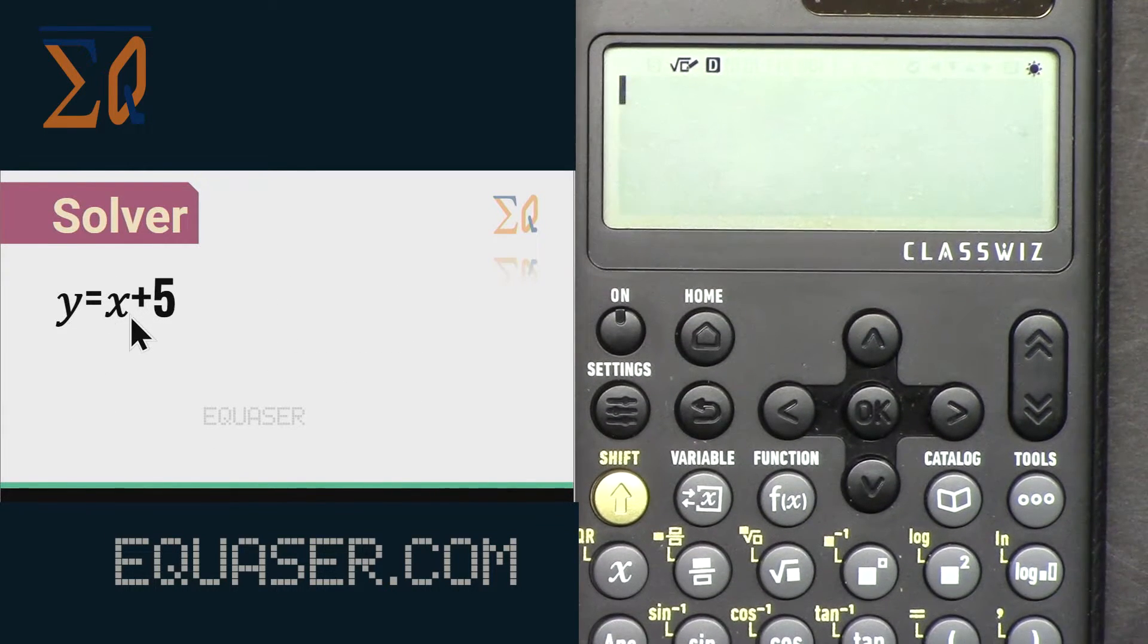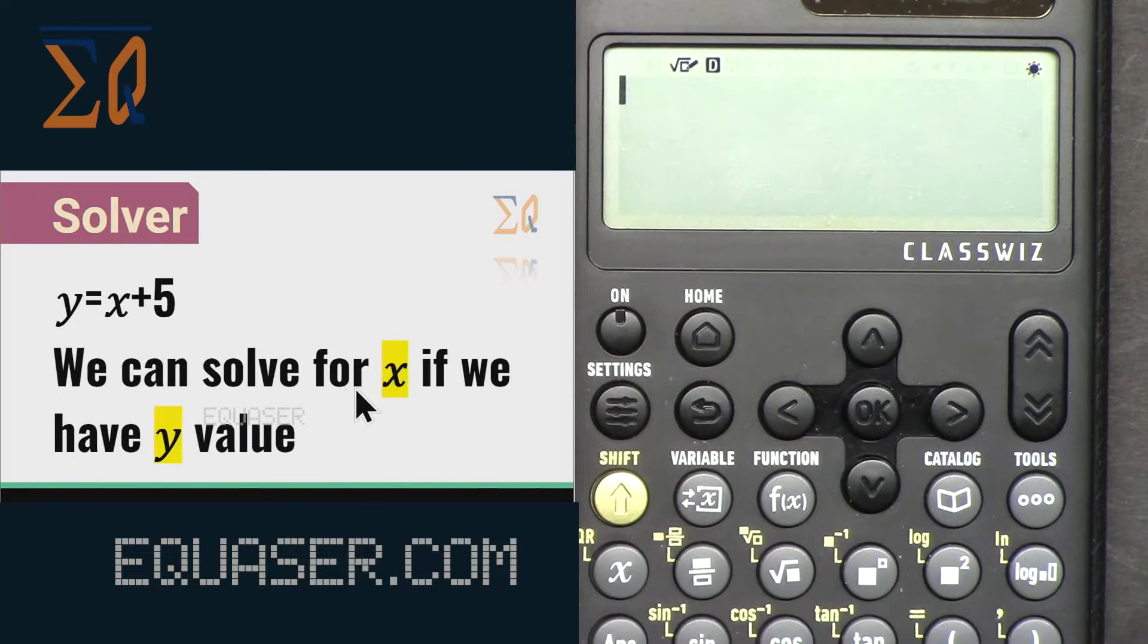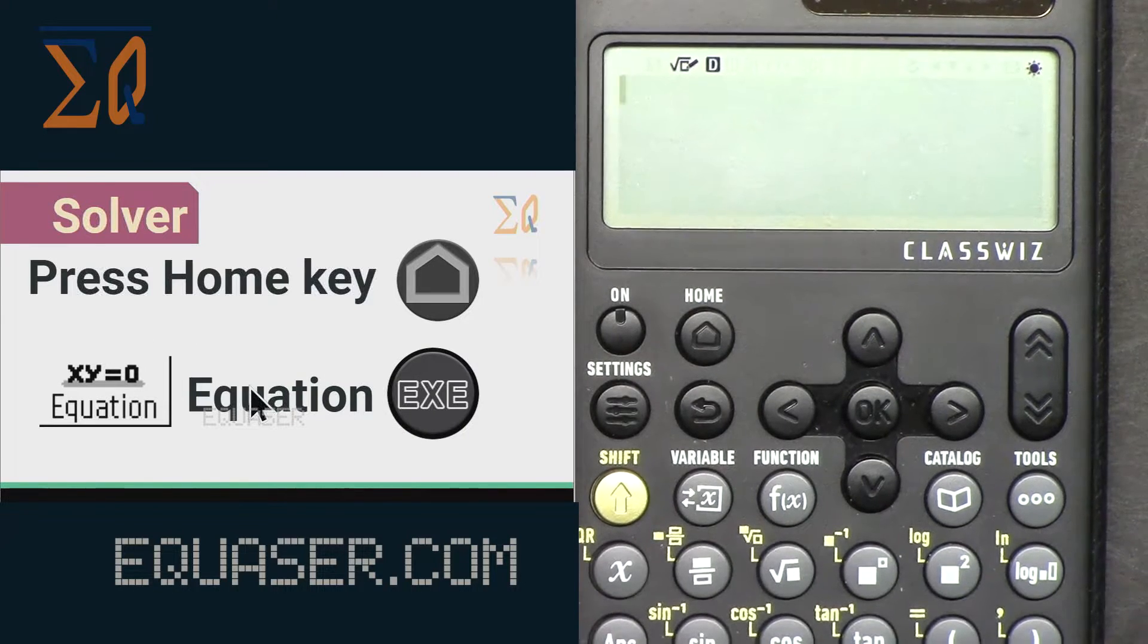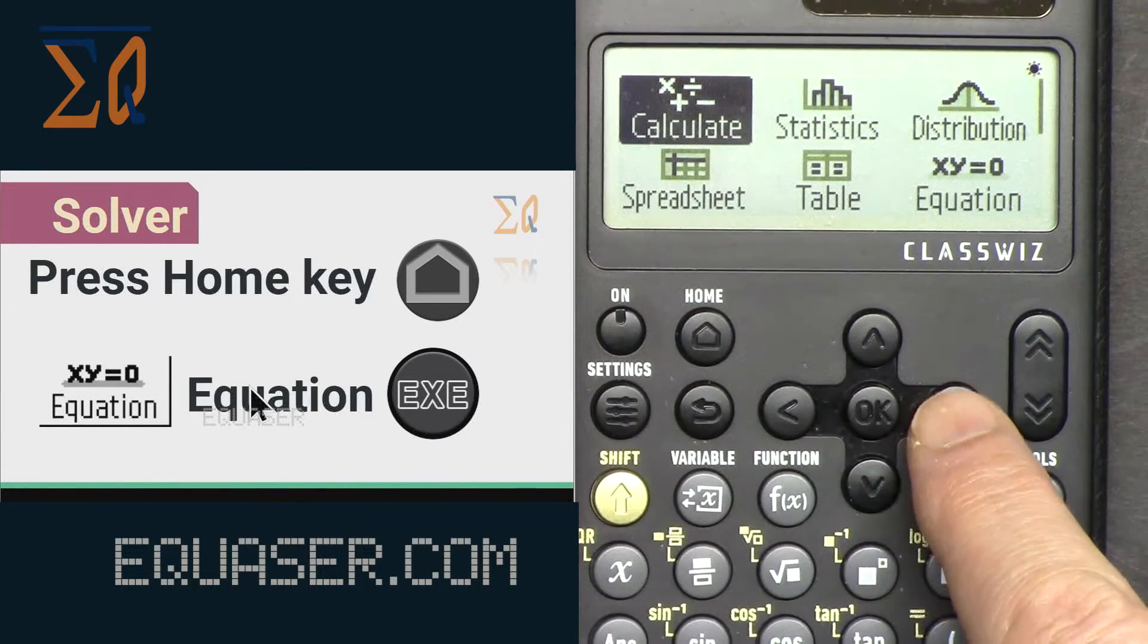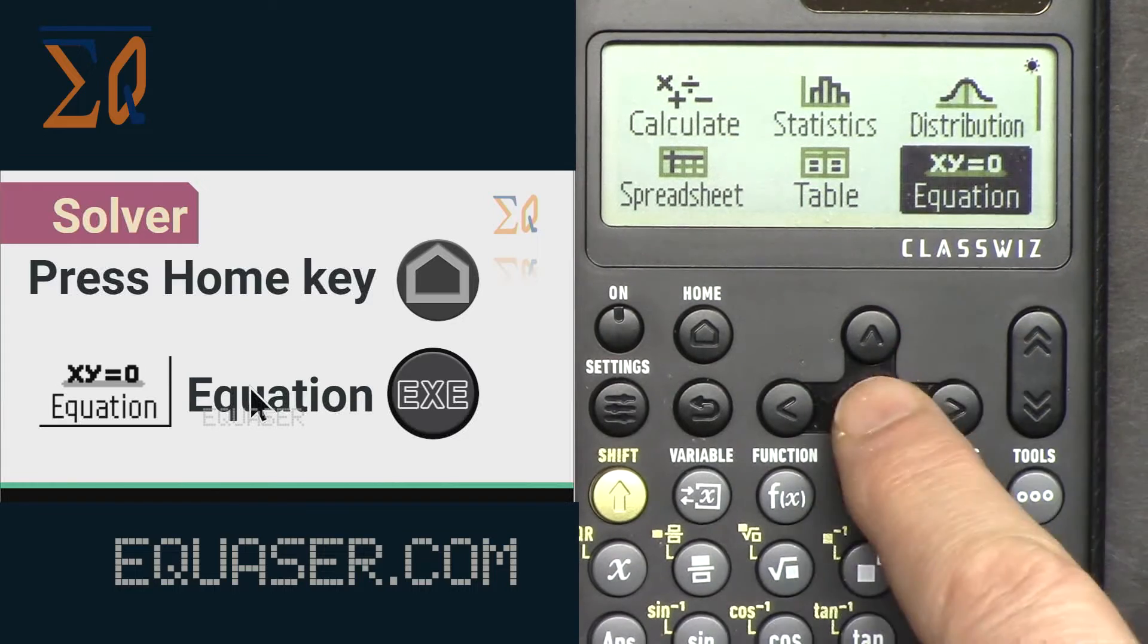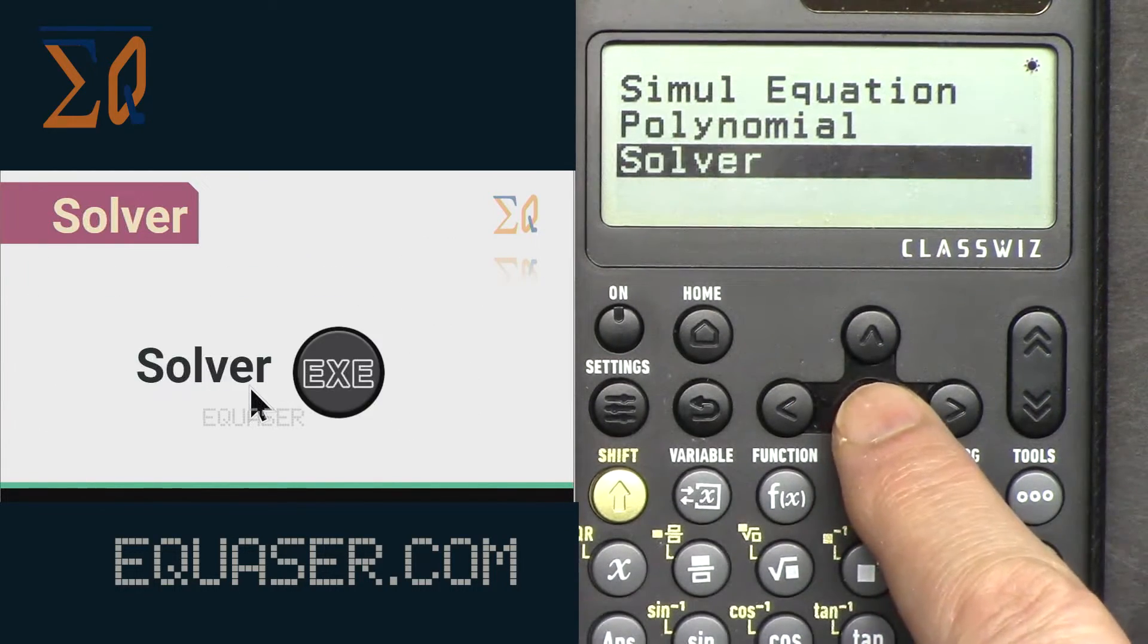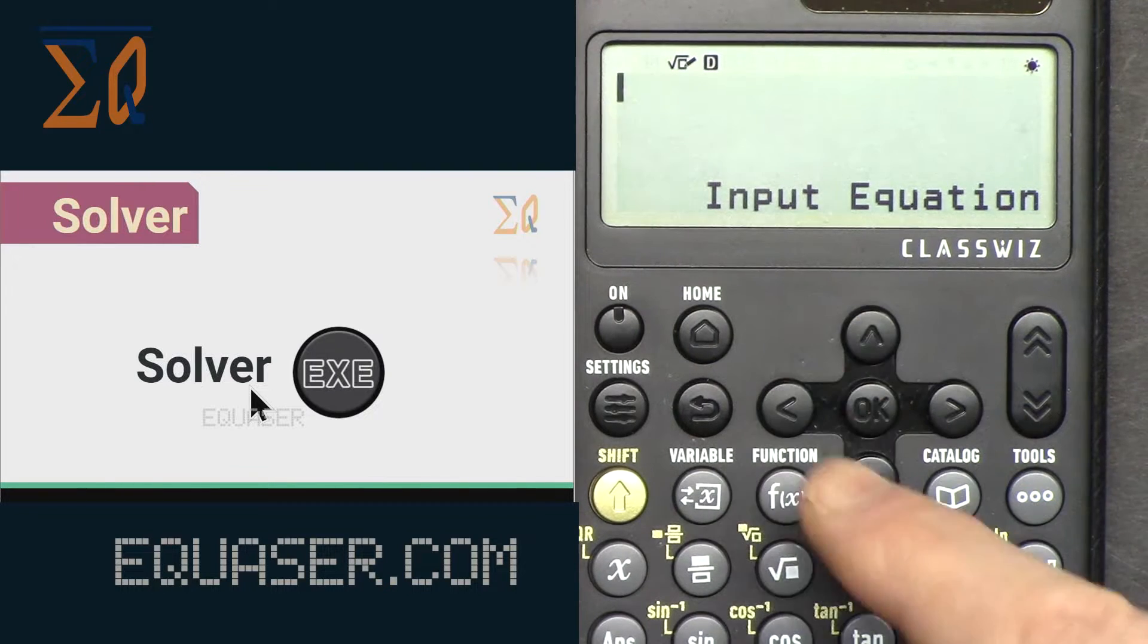For example, you can have y equals x plus 5 and you can solve for x if we have y. This is the case where there is only one unknown and we can solve it. To go to the equation mode, press home, go to the right, and then equation, and then click and select solver. We are now in solver mode.